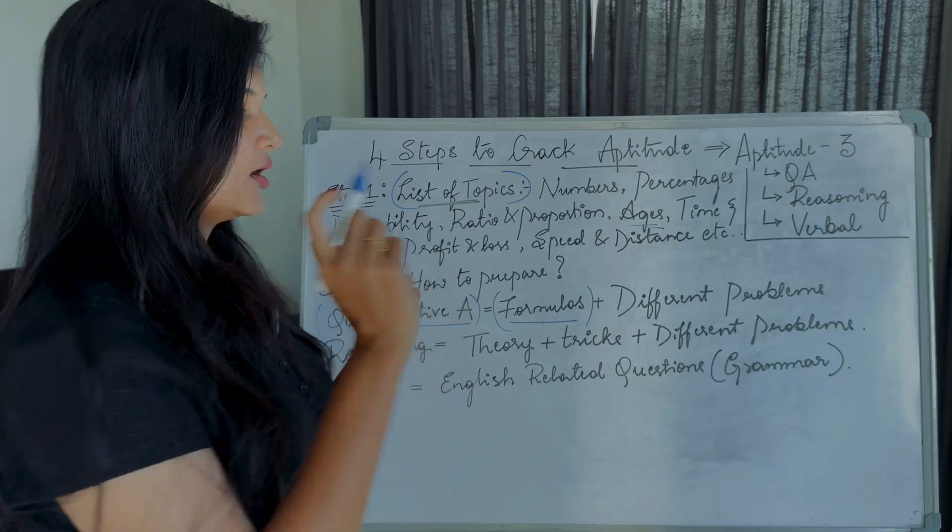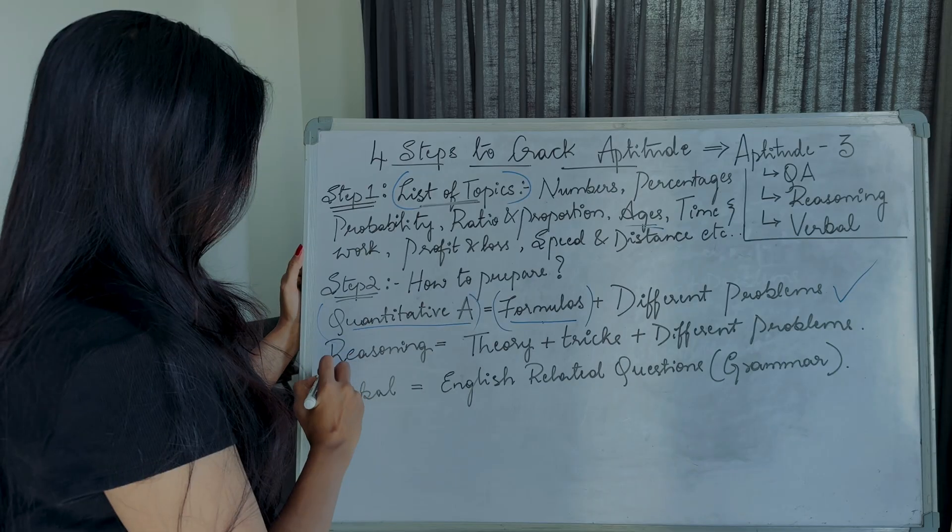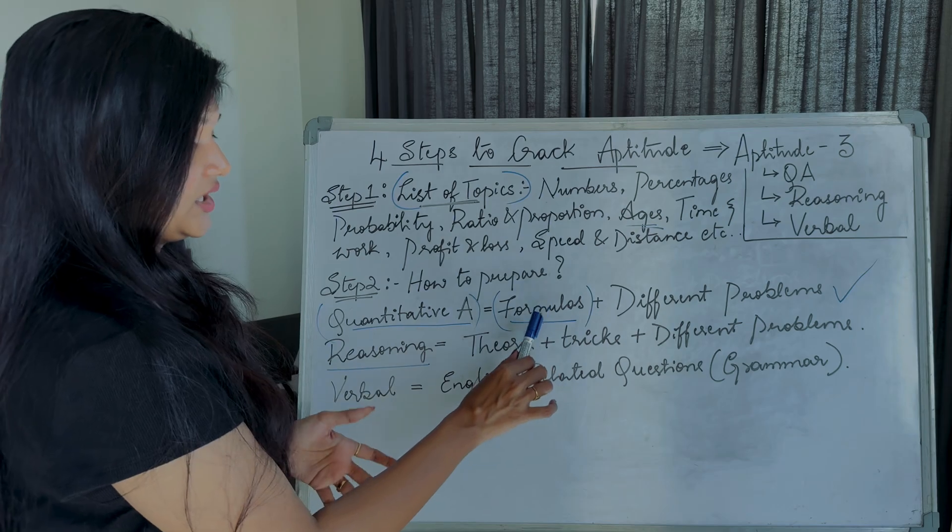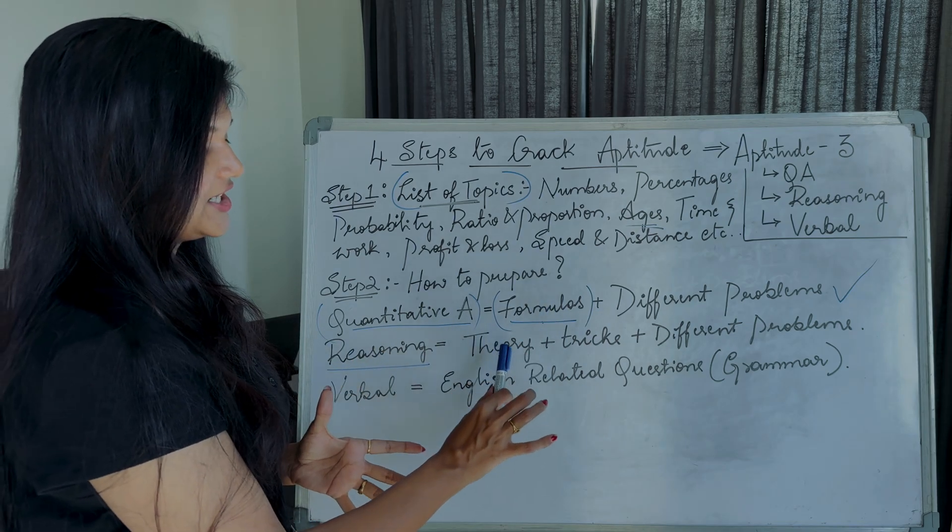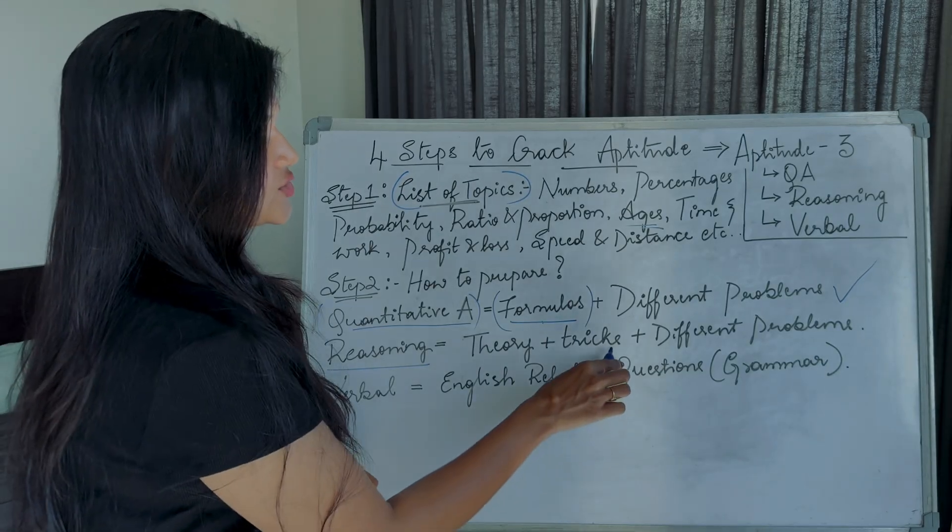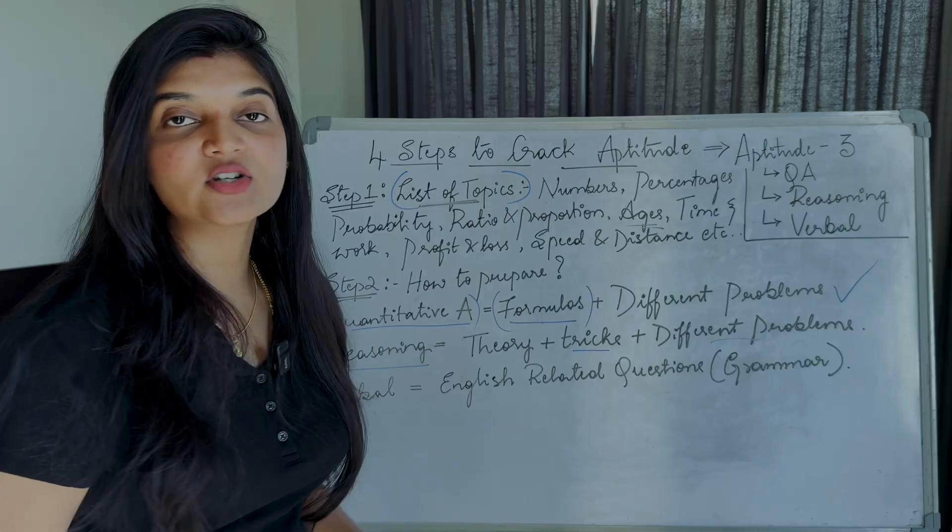So first part is done. The second part is reasoning. So reasoning is like for QA, we need formulas. For reasoning, we need to understand the theory. We need to know the tricks to solve. And again, coming to the problems, you will have to deal with the different kind of scenarios.